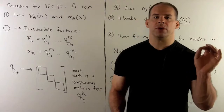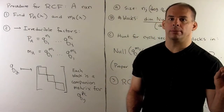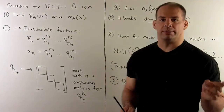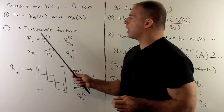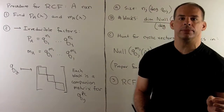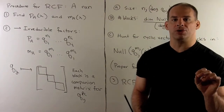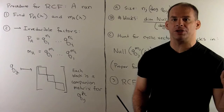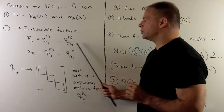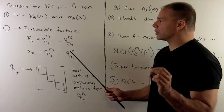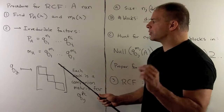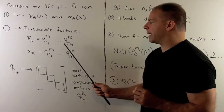Let's review how we set up rational canonical form. We have A, an n by n matrix over some field. Our first step is to find the characteristic and minimal polynomials of A. We'll factor those polynomials completely into their irreducible factors — we'll call those Q's. The exponents on the characteristic polynomial we'll call n's, and for the exponents on the minimal polynomial, we'll also call them n's.